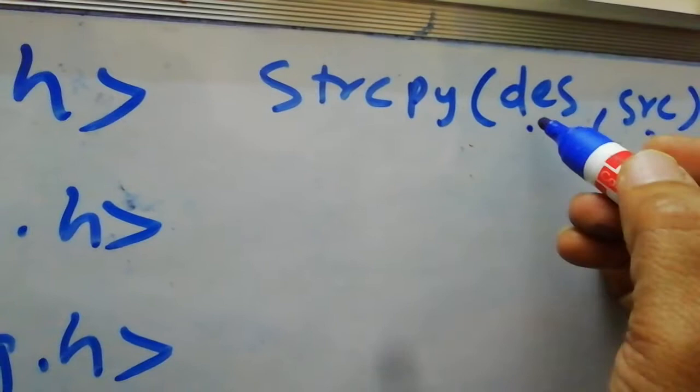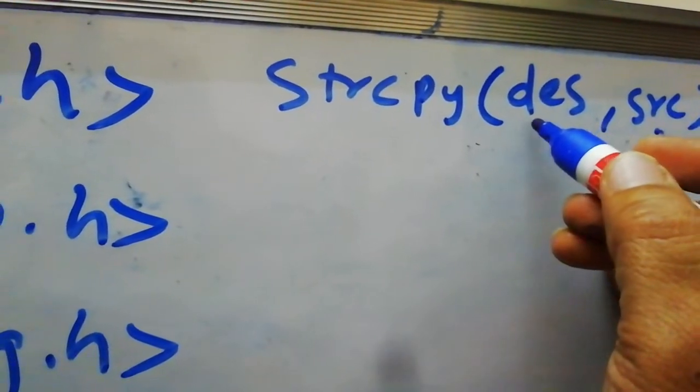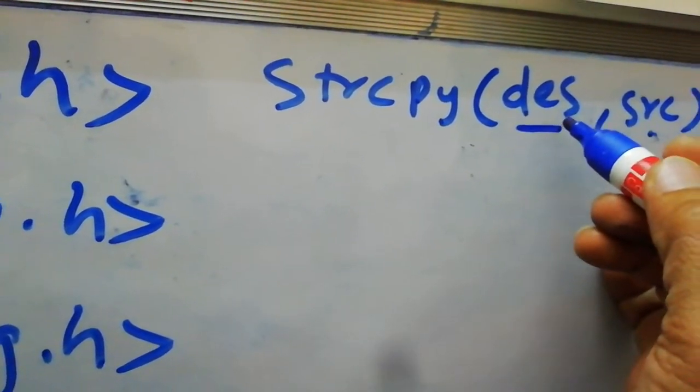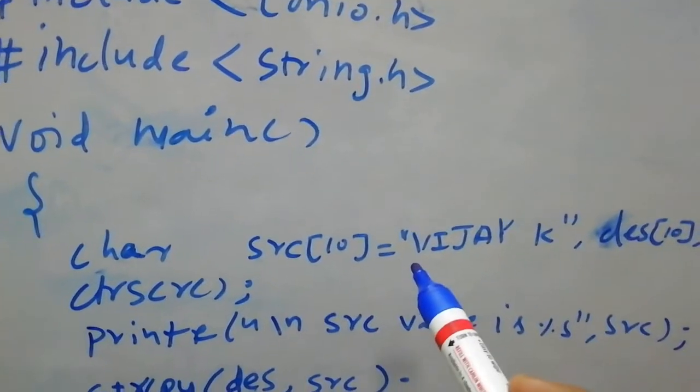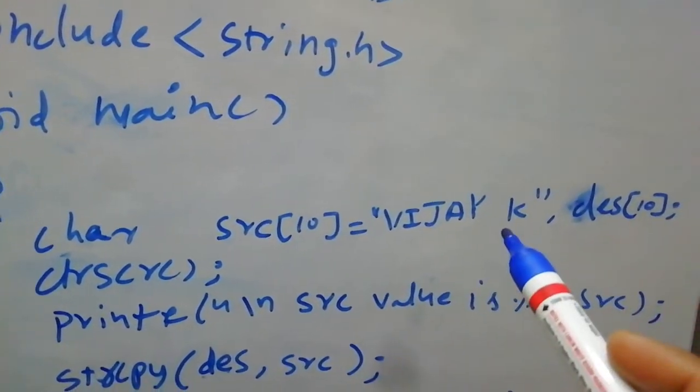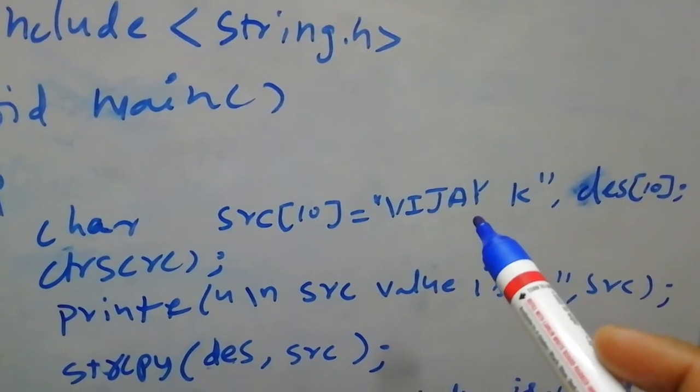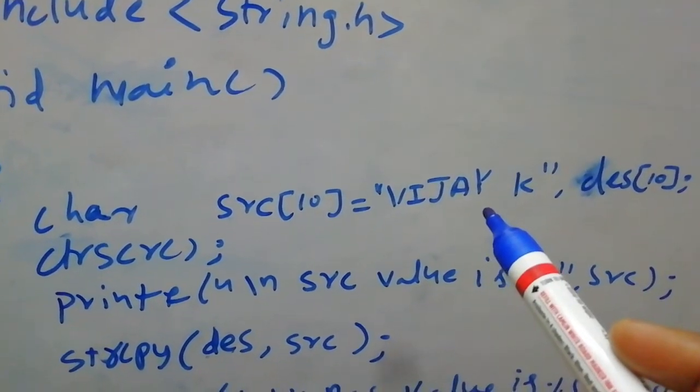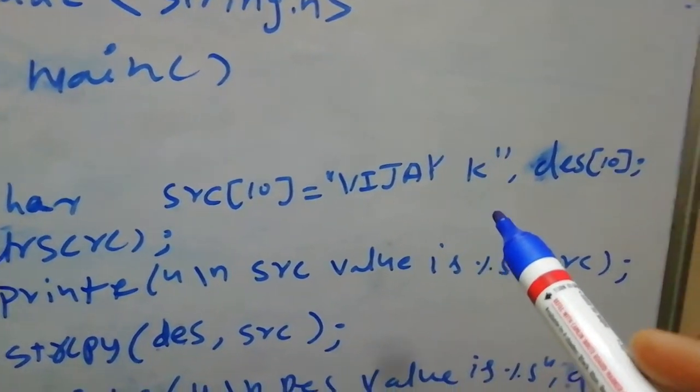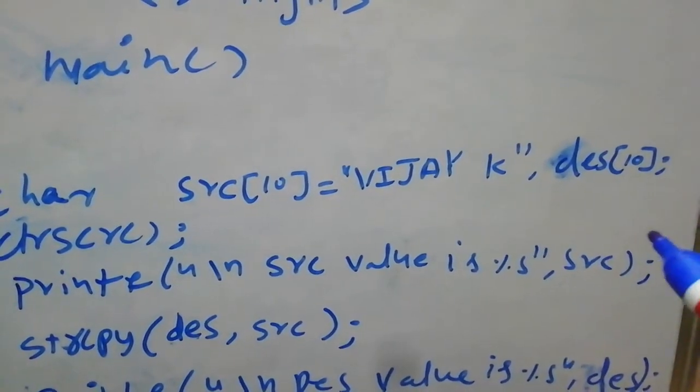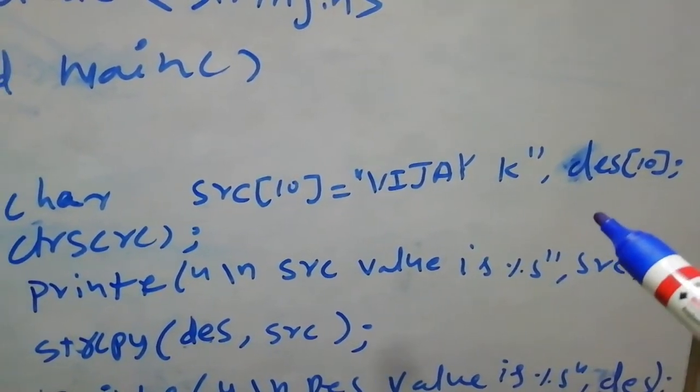A duplicate copy will be created in the destination. For that, I created one source variable and I assigned a value which is 'VIJAY K', and one more character array I defined, des of size 10.